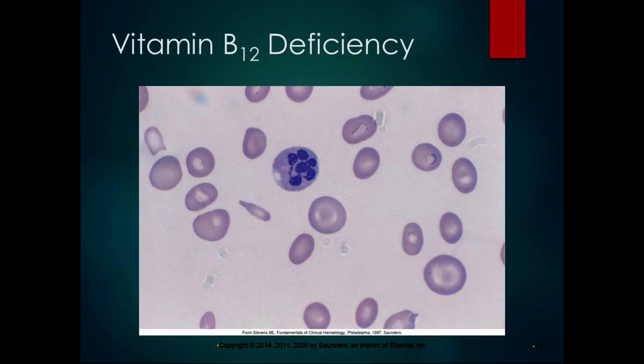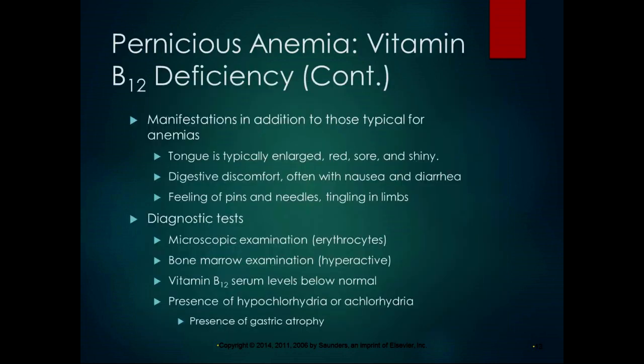In B12 deficiency, the red blood cells appear large and — notably — still have nuclei, which is abnormal. Manifestations are typical of other anemias: tongue is typically enlarged, red, sore, and shiny — that's glossitis. Digestive discomfort with nausea and diarrhea, and pins and needles and tingling in the limbs — that tingling is specific to pernicious anemia. Diagnosis involves microscopic and sometimes bone marrow examination, testing B12 serum levels, and looking for gastric atrophy.